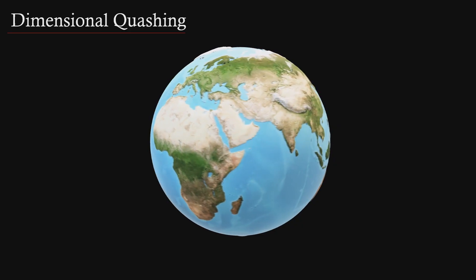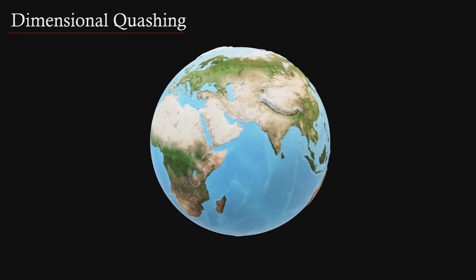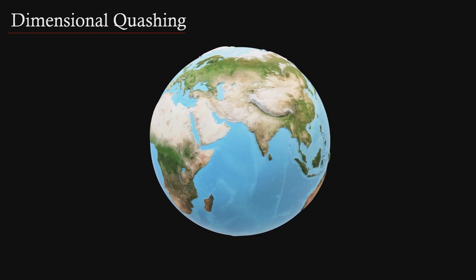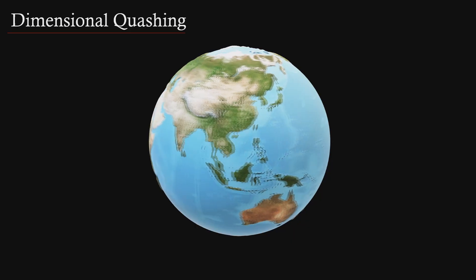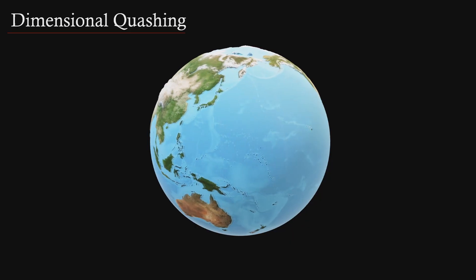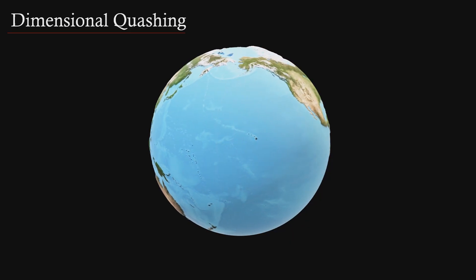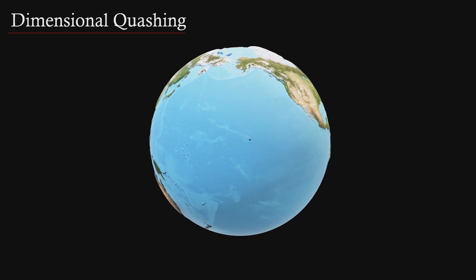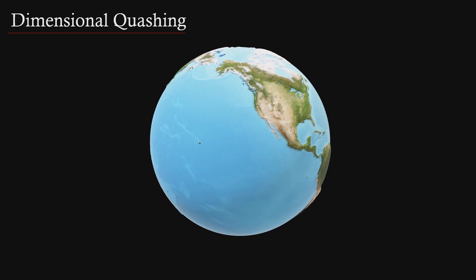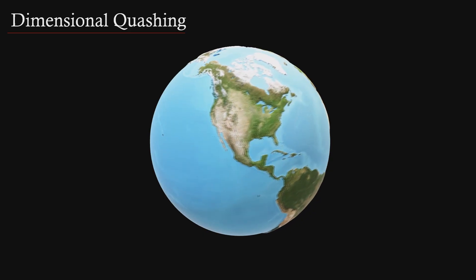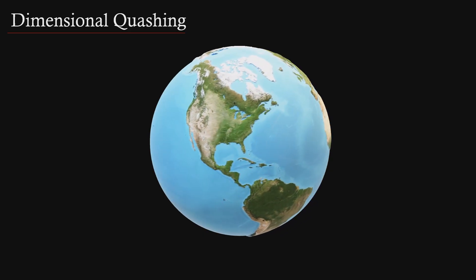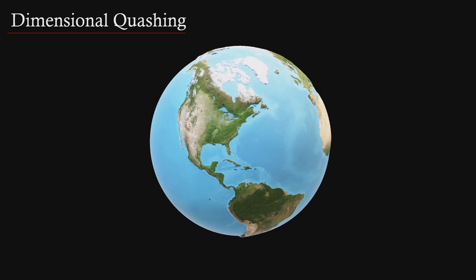This is the view of the Earth as a globe, and the most we can see of it at any one time is about half. The center area is a pretty good representation of the surface of the planet, but the surrounding areas become more distorted as you get closer to the edge.